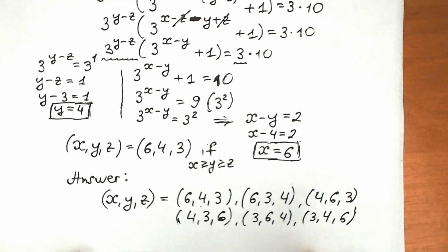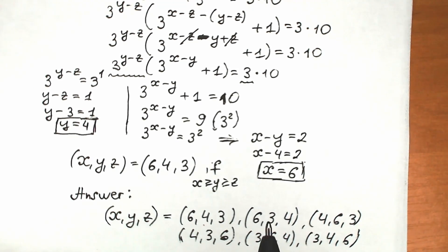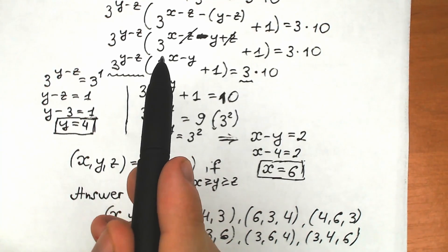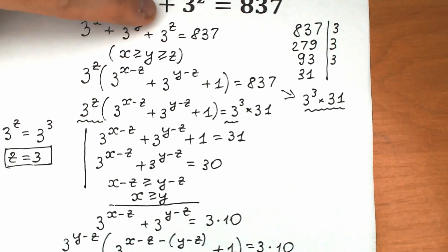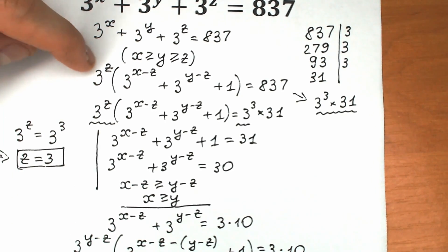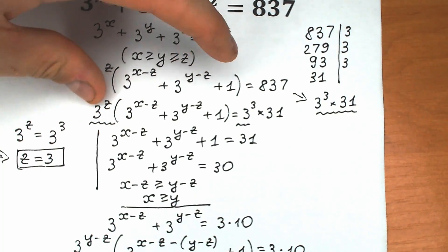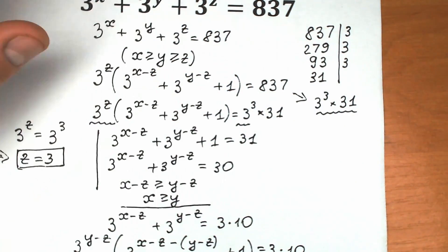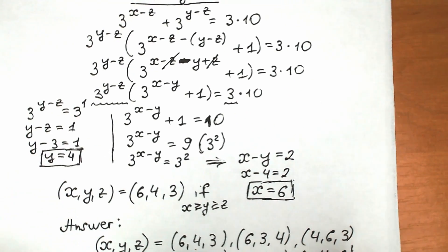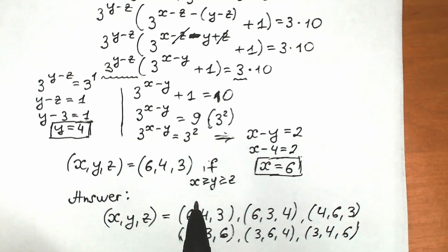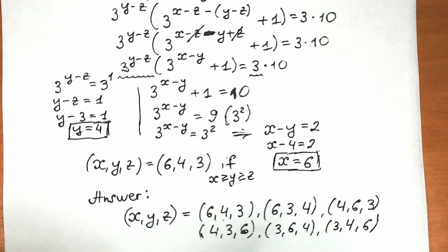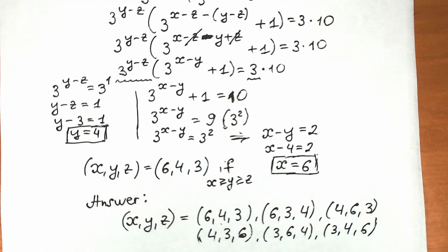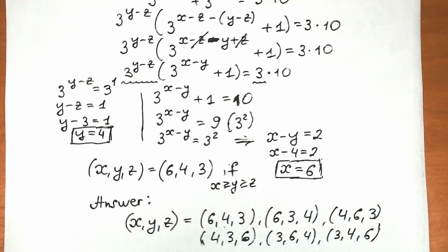I hope you understand this explanation. This is a really great method for solving these kinds of challenges, where you factor the expression at each step — in this case, factoring 3 to the power z, finding z equals 3, then step by step eliminating the parentheses to find y and x. Thank you for your time and support. See you in the next videos. If this video was helpful, don't forget to like and subscribe.